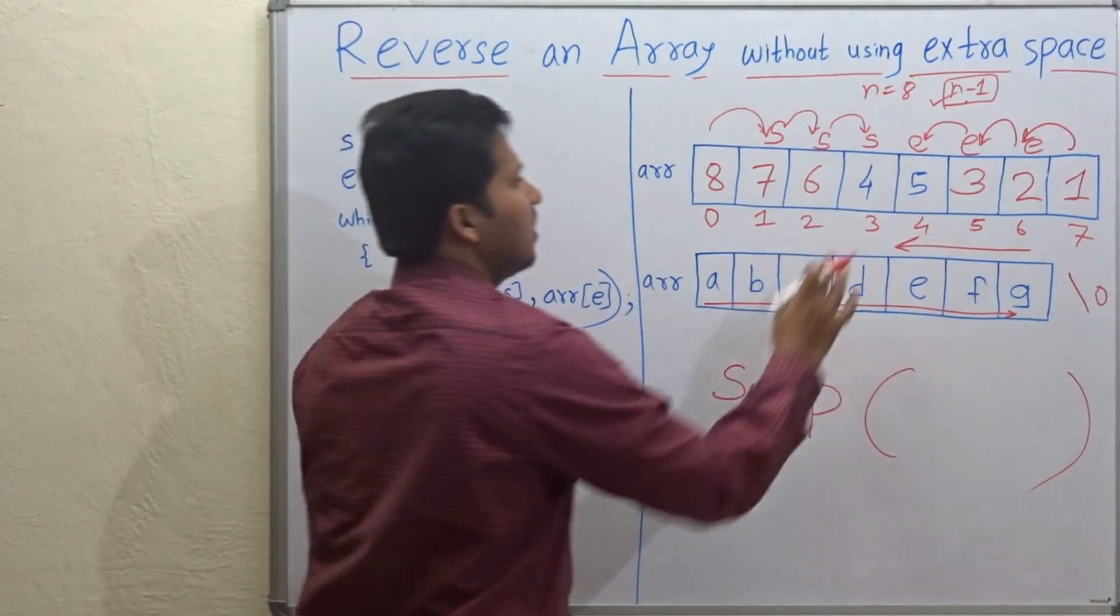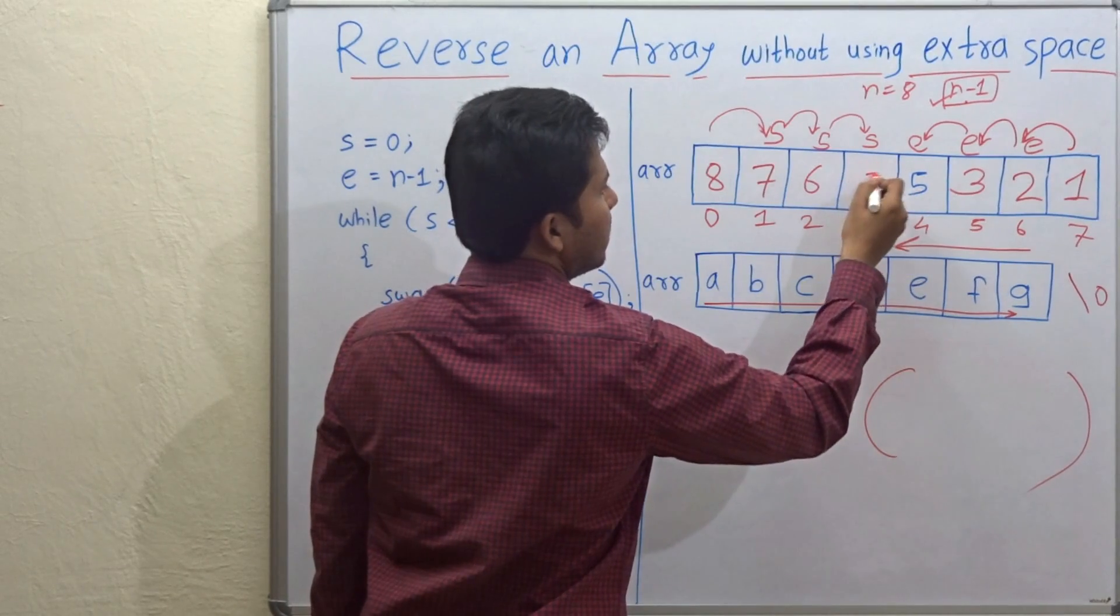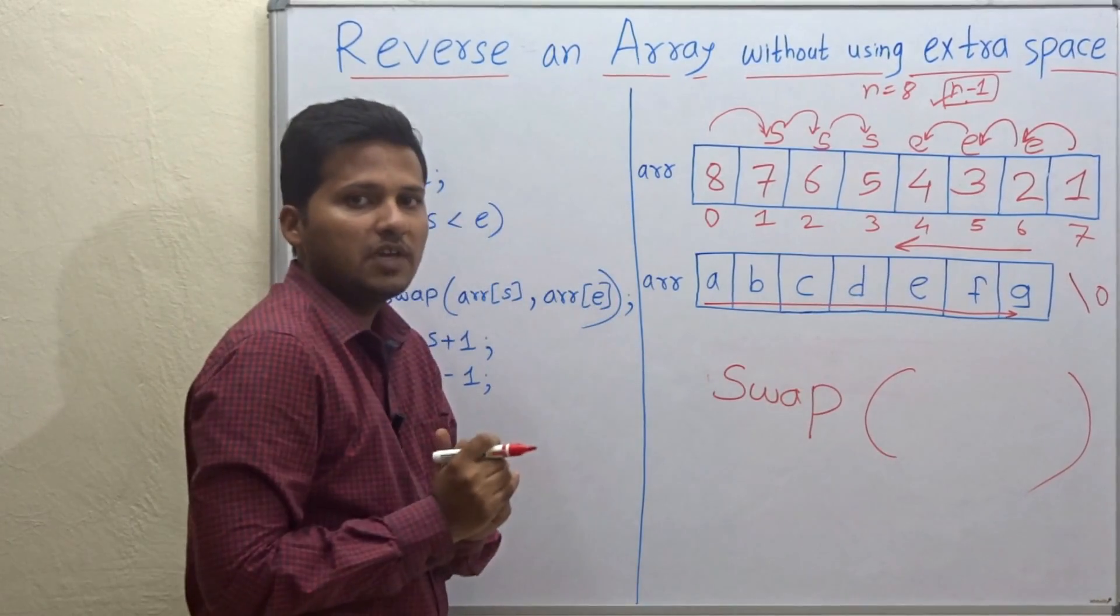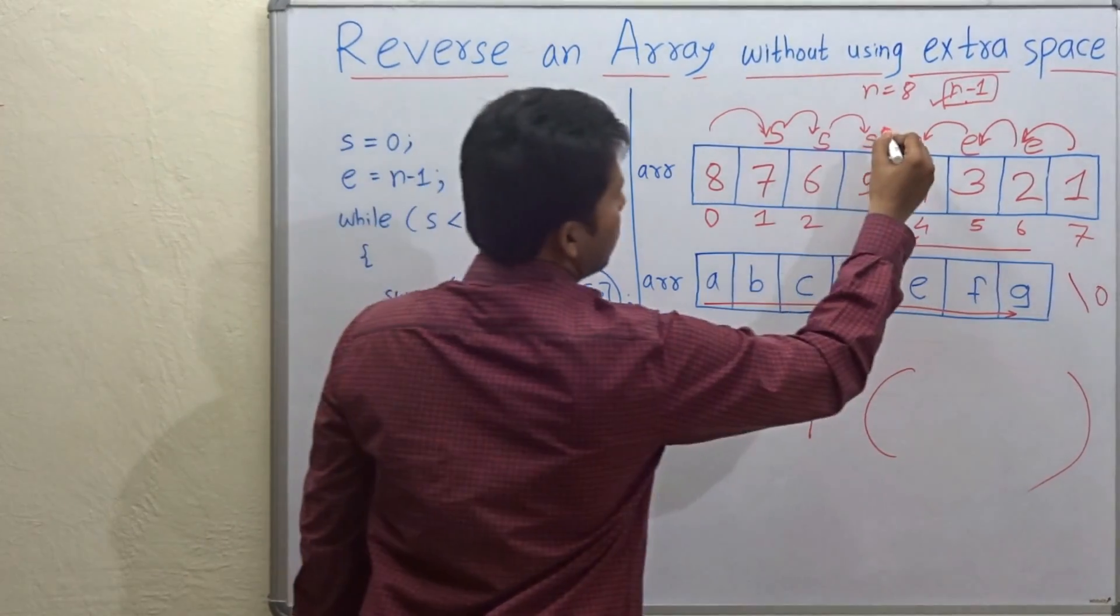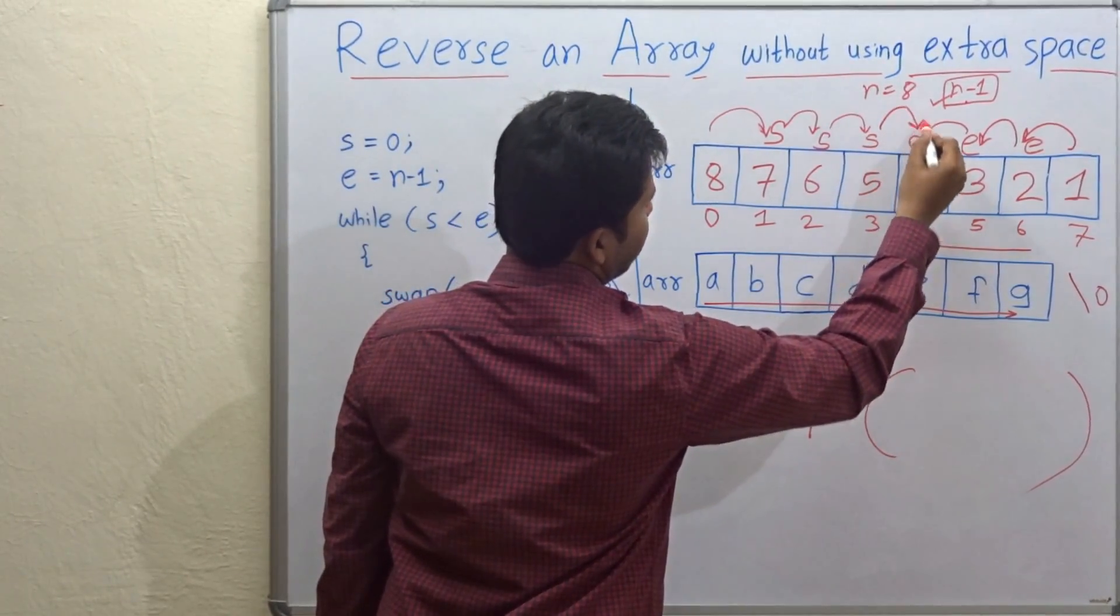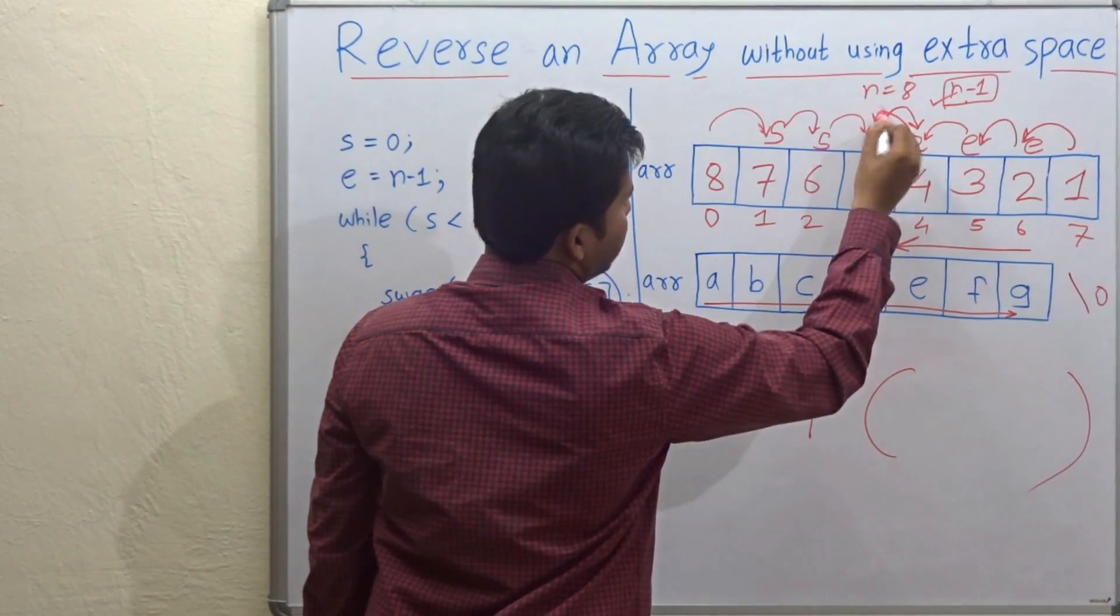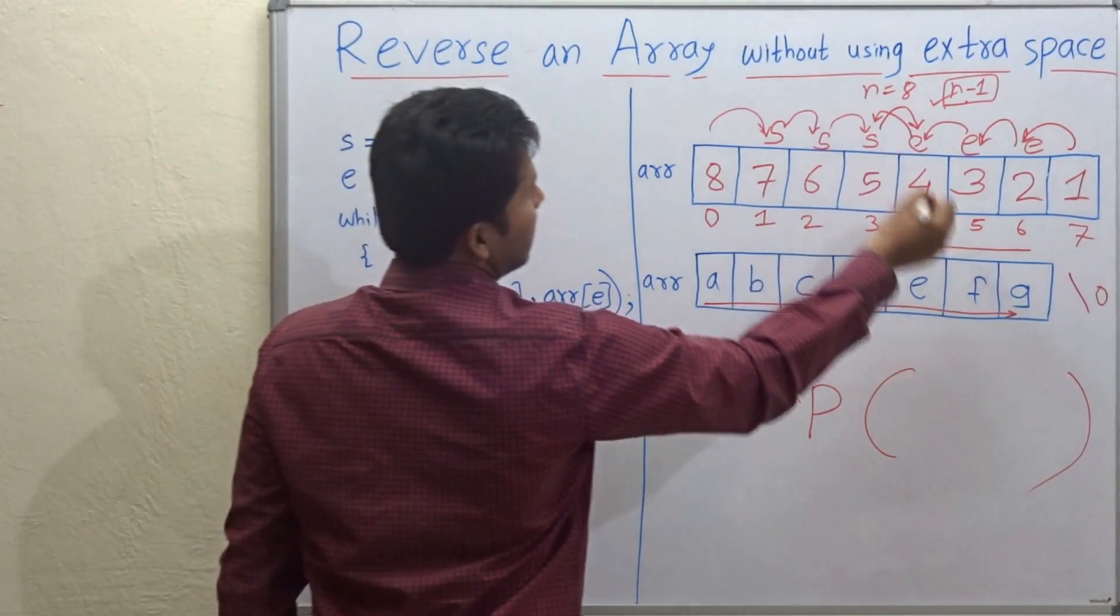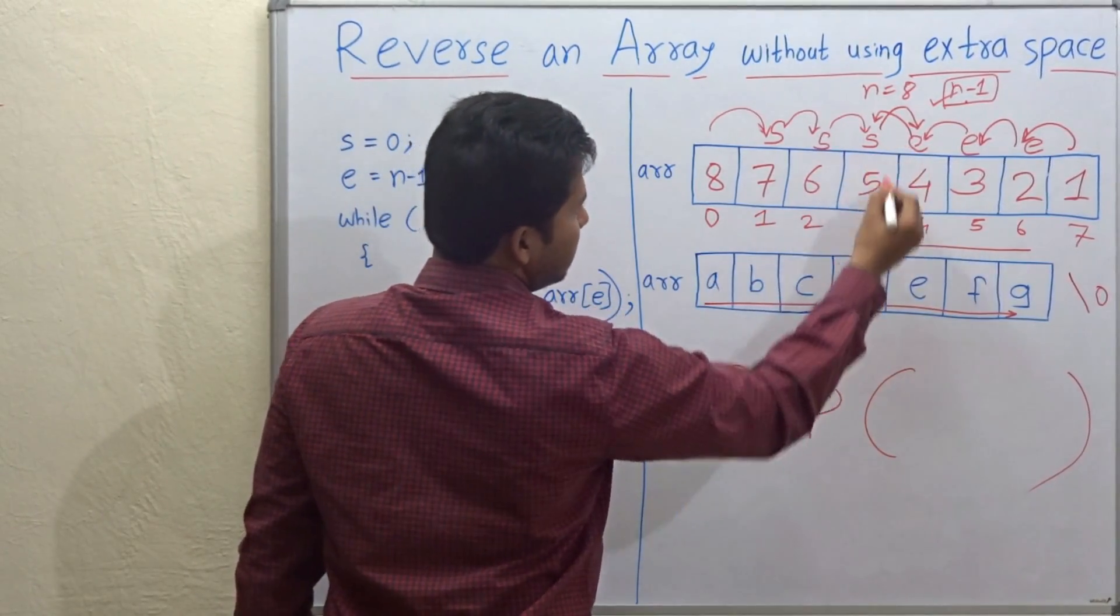Now 5 will come here and 4 will come here. They will be swapped. Now S will be incremented and E will be decremented. Here S will be 4 and E will be 3.